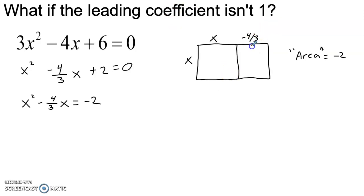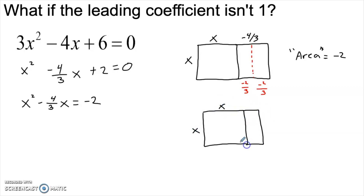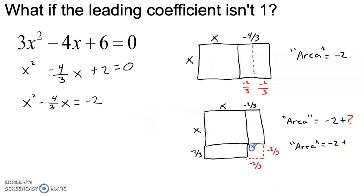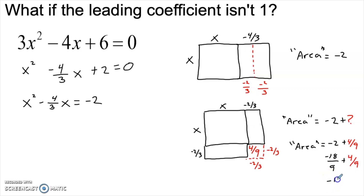And now we're going to solve this exactly as we did before. We're going to start by splitting this rectangle right down the middle. So half of negative 4 thirds would be negative 2 thirds. Then we're going to break this piece off and bring it down around to the bottom. At this point, we've gotten our rectangle to be as close to a square as possible, but we need to complete the square by filling in this missing piece down here. This time it's a negative 2 thirds by negative 2 thirds square. Multiplying negative 2 thirds by negative 2 thirds, we get an area of 4 ninths for this extra piece of the square.